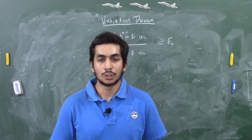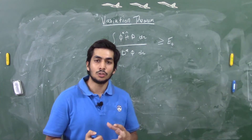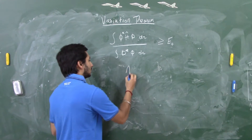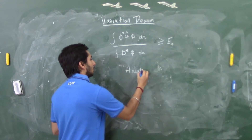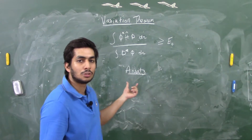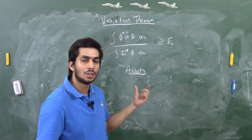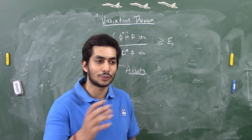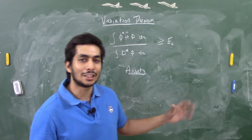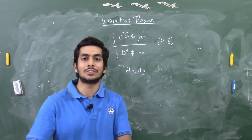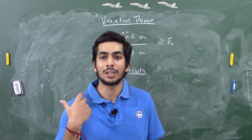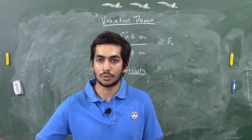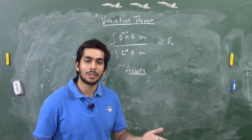Variation theorem states that you need to use a trial wave function, also called an ansatz wave function. Ansatz basically means educated guess or educated assumption. It's a guess wave function — but since we are scientists, we give it the name 'trial wave function' or 'ansatz wave function.' In reality, it's just an educated guess made out of intuition.